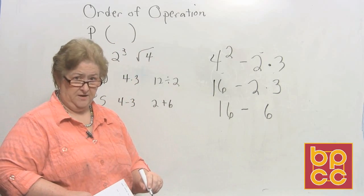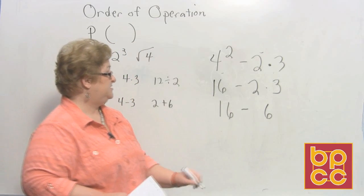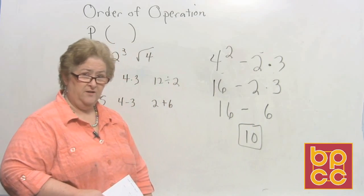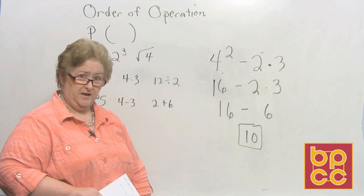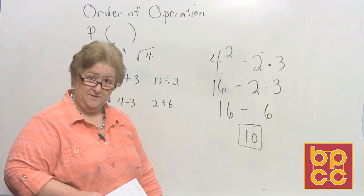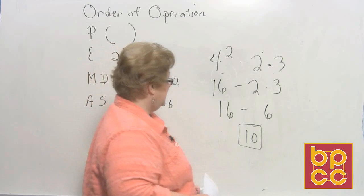16 minus 6. And now we're ready to finish it up. 16 minus 6 is 10. So we started with our exponents. Then we did our multiplication. And then we finished up with subtraction. That was pretty good, wasn't it? All right. Let's go for our next one.